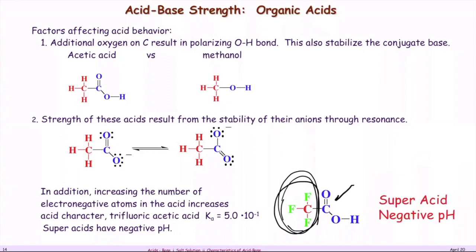The electronegativity domination from the CF₃ group is so strong that these are called super acids. We don't really use trifluoroacetic acid or chloroacetic acid much in lab — chloroacetic acid was removed from an experiment because it's not a very safe or very strong acid. We tend not to use these super acids unless there's a specific purpose.